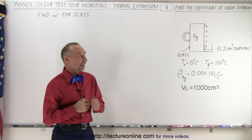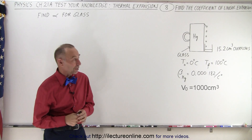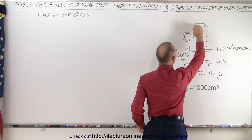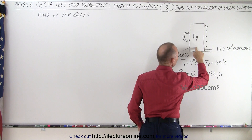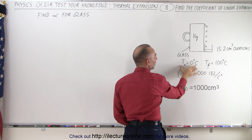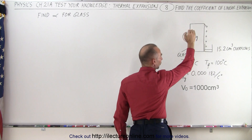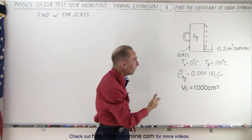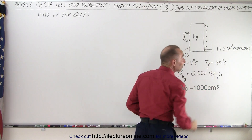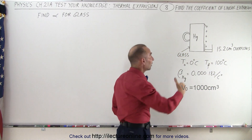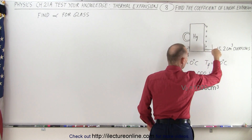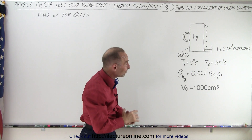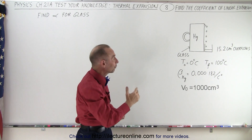Welcome to our lecture online. Our next problem is an interesting one. We have a glass pitcher filled all the way to the very top with mercury. Starting at zero degrees centigrade, the mercury is at the very top level. We then heat both the pitcher and the mercury to 100 degrees centigrade, and some mercury comes out and is collected in a small cup. When measured, it turns out to be 15.2 cubic centimeters of overflow.